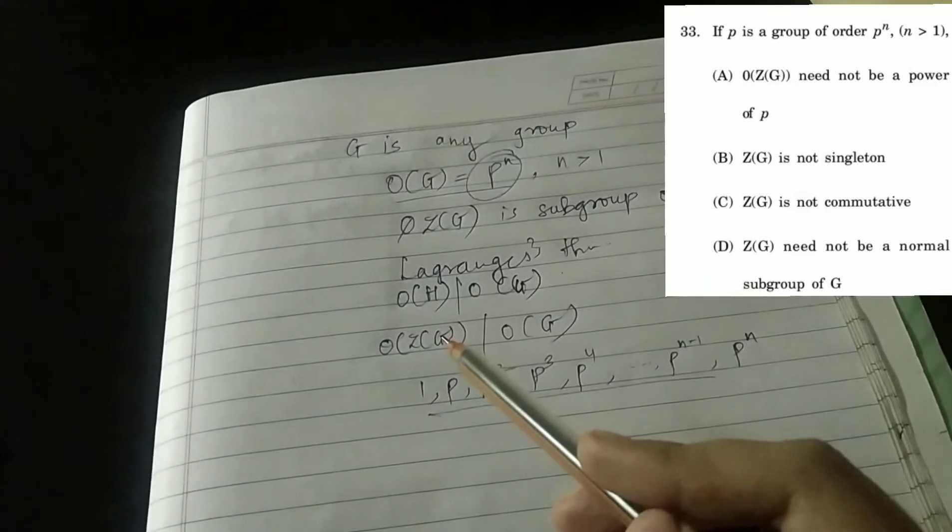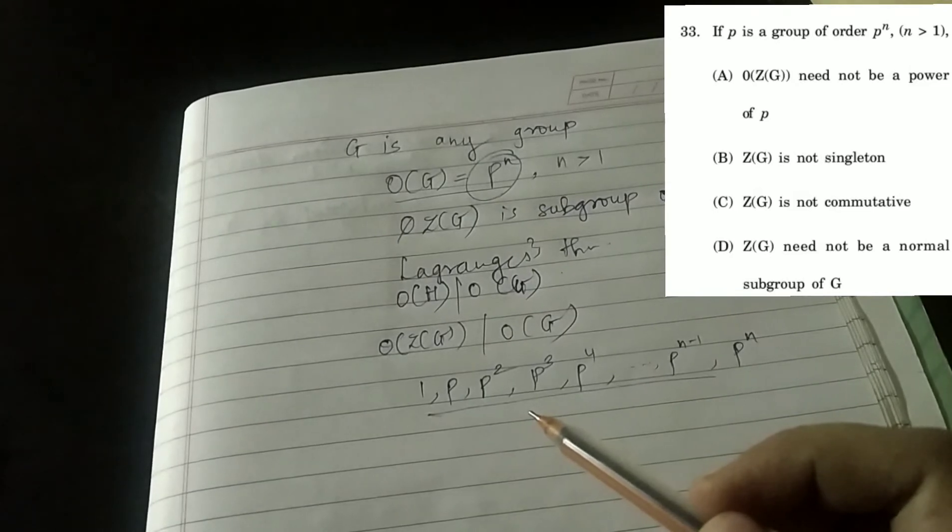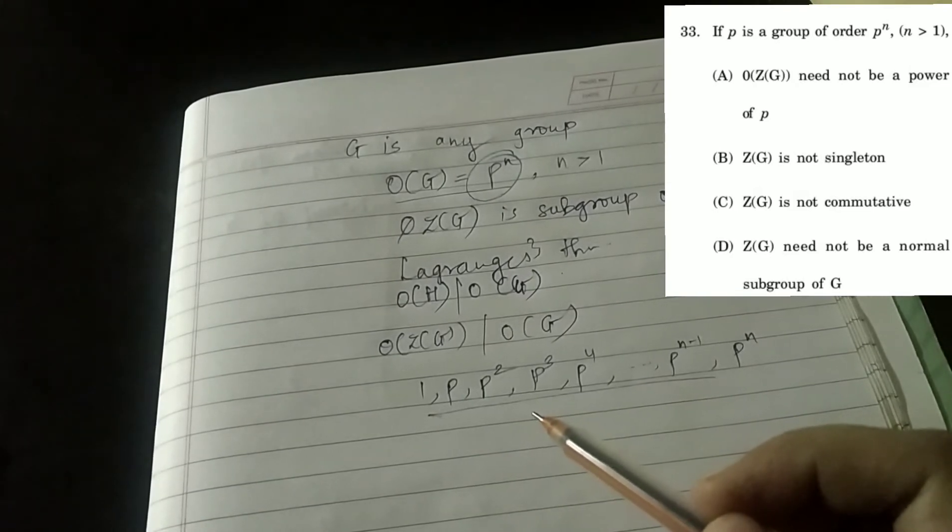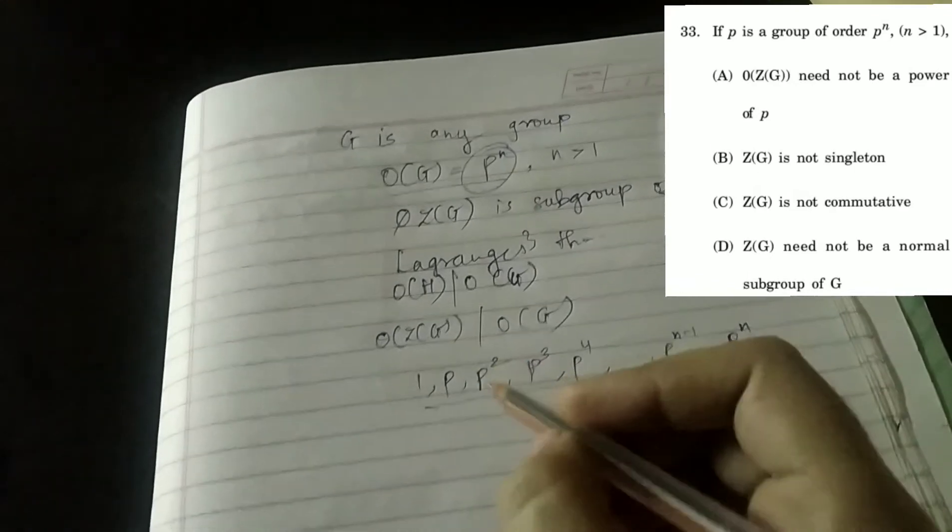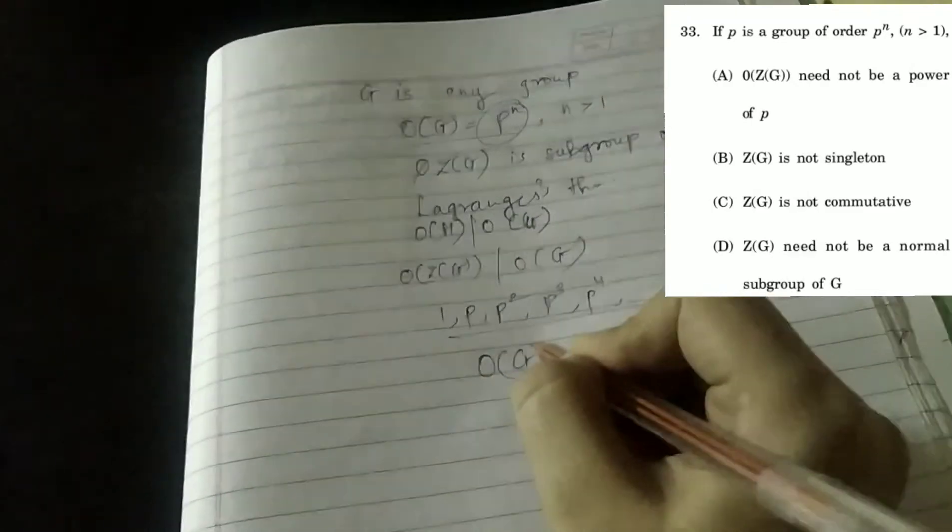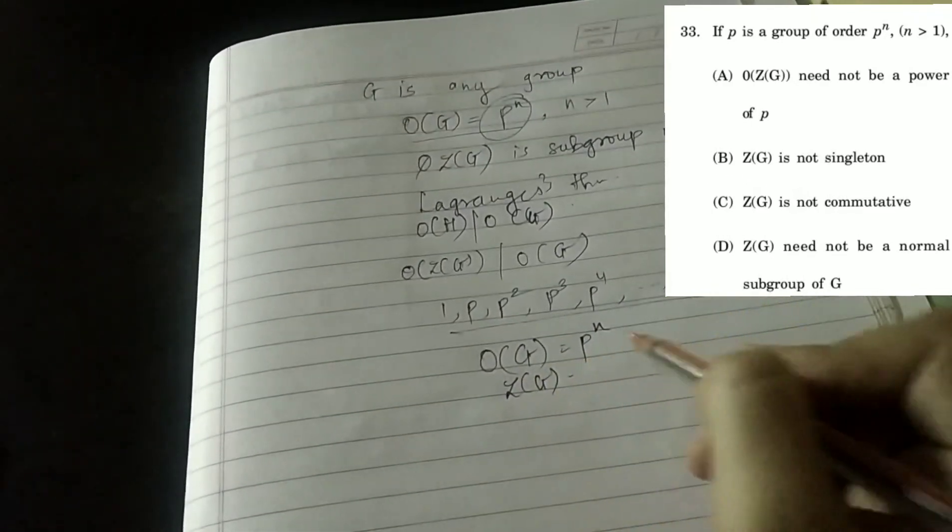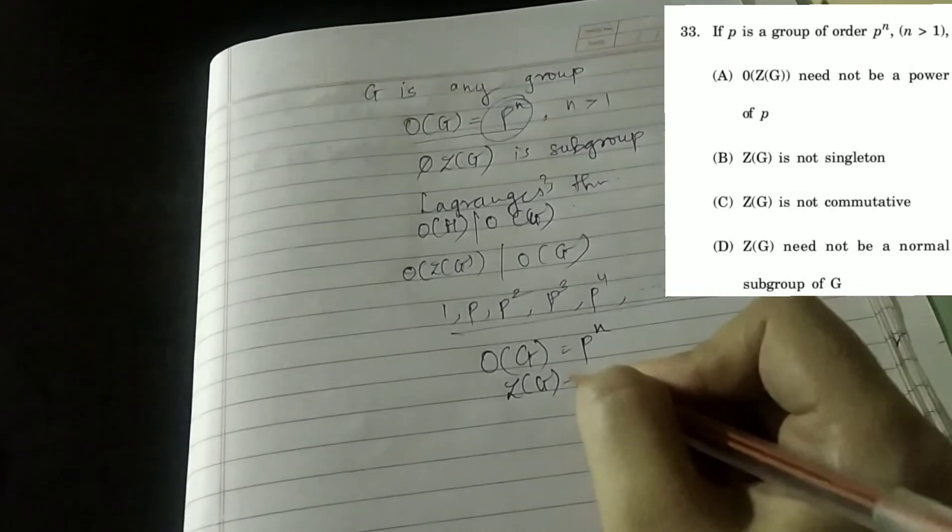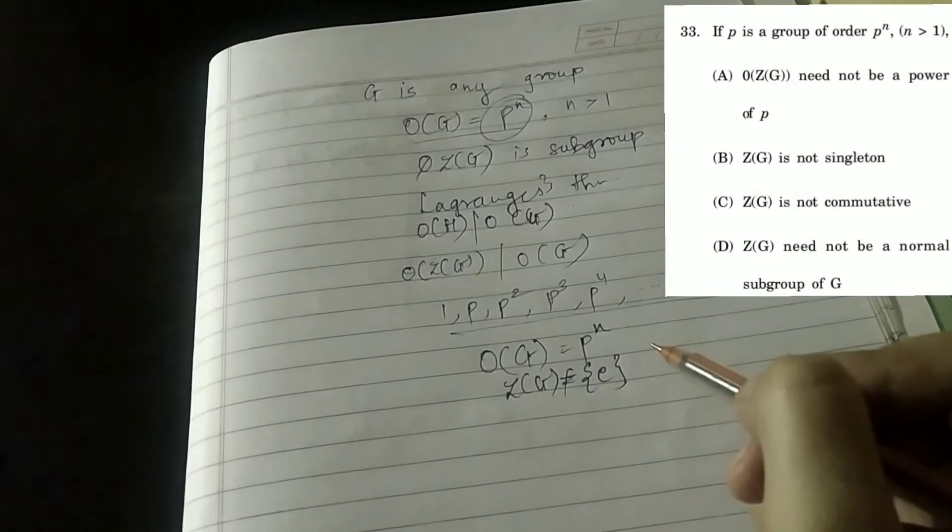Option A is discarded. Now B is Z(G) is not singleton. See, this option is correct. This is very famous theorem in group theory that if we have G whose order is power of prime, so Z(G) is non-trivial subgroup of G. It is not equal to singleton identity. Proof of this theorem is given in description box.